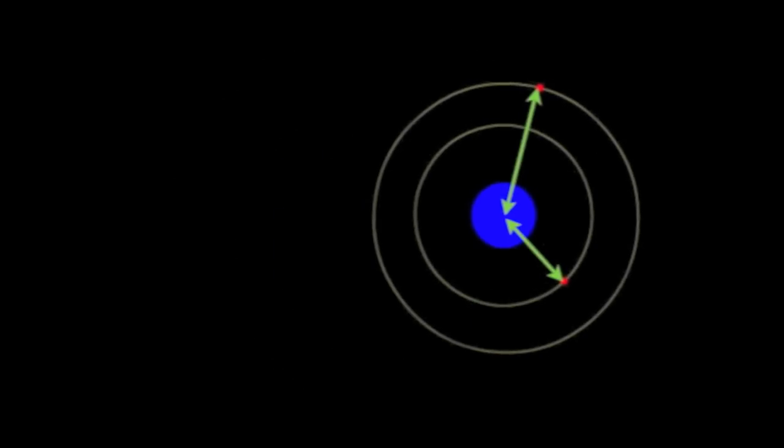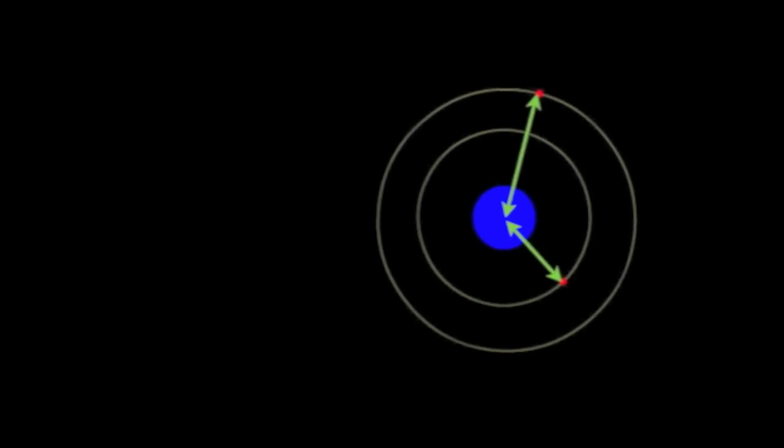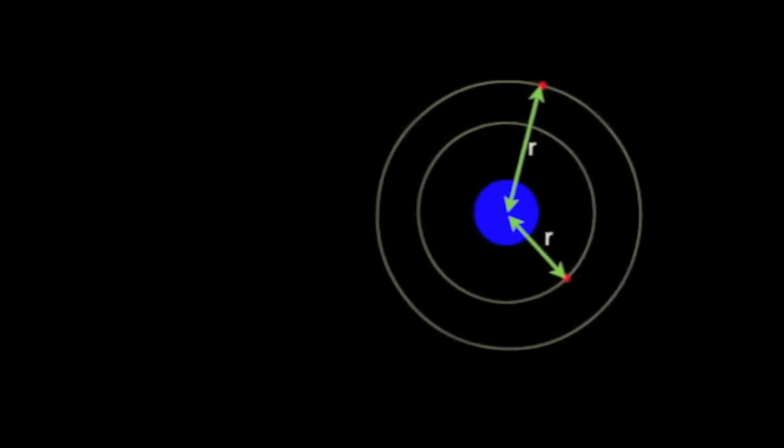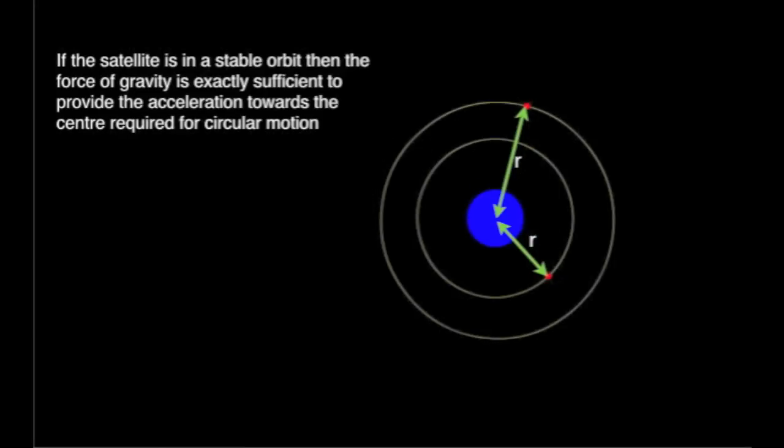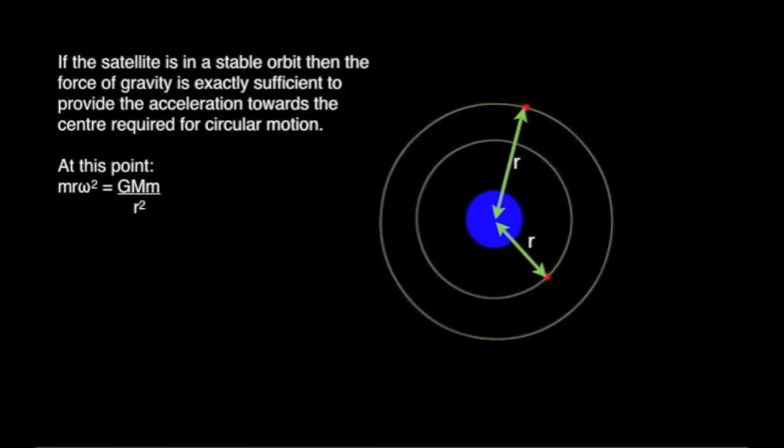We can calculate the matching speed, height, and orbit time of every satellite to match its purpose. If the satellite is in stable orbit, then the force of gravity must be exactly equal to the force needed to provide the acceleration to the centre for circular motion. We look at this both in terms of angular velocity and linear velocity.